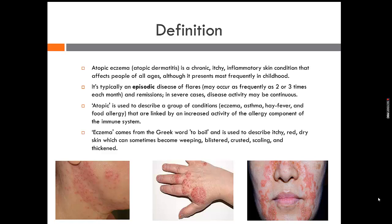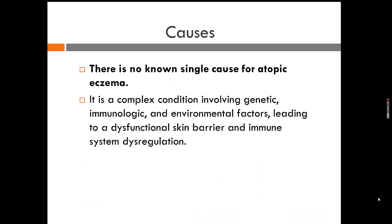The word 'eczema' comes from the Greek word meaning 'to boil' and is used to describe itchy, red, dry skin which can sometimes become weeping, blistered, crusted, scaling, and thickened. Unfortunately, there is no known single cause for atopic eczema. It is a complex condition involving genetic, immunologic, and environmental factors leading to a dysfunctional skin barrier and immune system dysregulation.